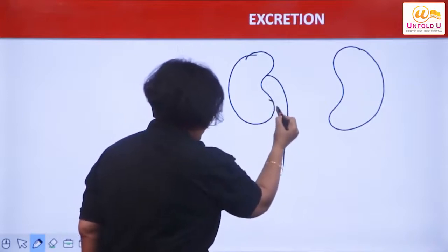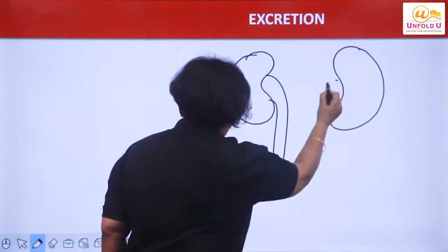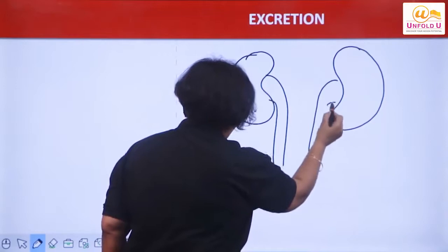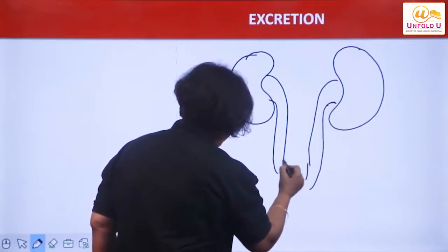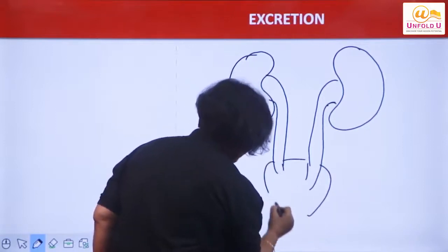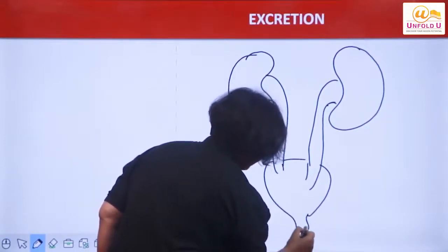And in the kidneys, these tube-like structures are arising and these are called ureters. These tube-like structures are called ureters. Ureters are leading into, entering into...